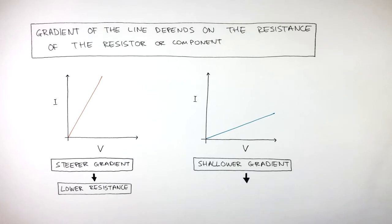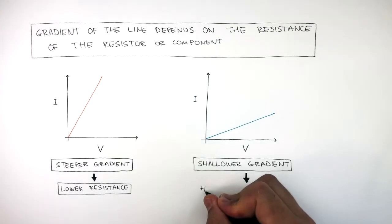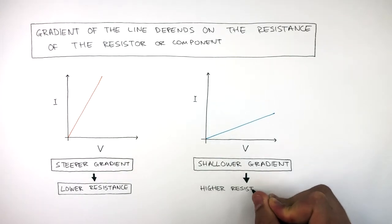The graph on the right has a shallower gradient. Therefore, we can interpret the component as having a higher resistance.